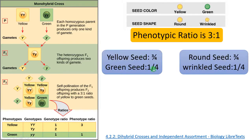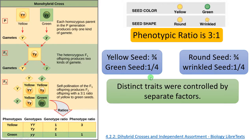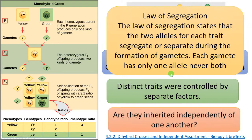So the genotypic ratio is 1:2:1 and the phenotypic ratio is 3:1. Mendel found that distinct traits are controlled by separate factors and proposed the law of segregation, which states that the two alleles — capital Y and small y — for each trait segregate or separate during the formation of gametes, so that each gamete has only one allele, never both. A gamete can have either capital Y or small y; it cannot have both. This is called the law of segregation, or law of separation of alleles during gamete formation.